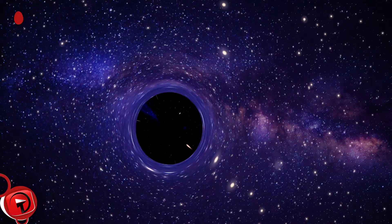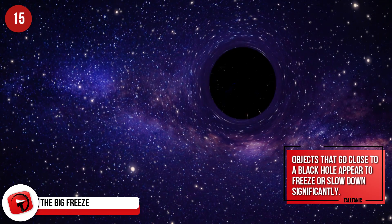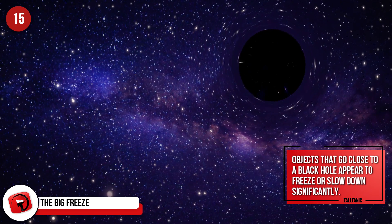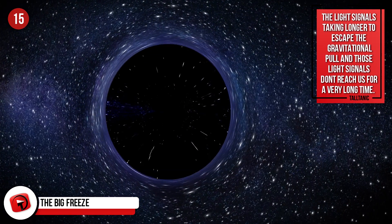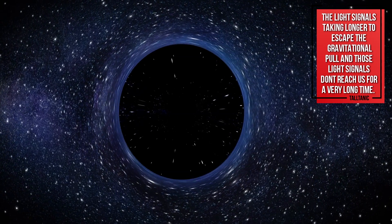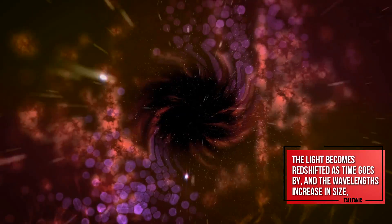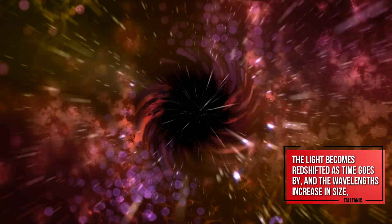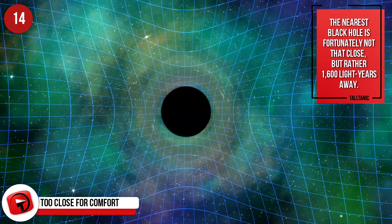The Big Freeze. If you were able to observe the happenings in and around the black hole, you'd notice that objects that go close to a black hole appear to freeze or slow down significantly. This has to do with the light signals taking longer to escape the gravitational pull, and those light signals don't reach us for a very long time. The light becomes redshifted as time goes by, and the wavelengths increase in size, eventually turning into infrared radiation, and then radio waves.